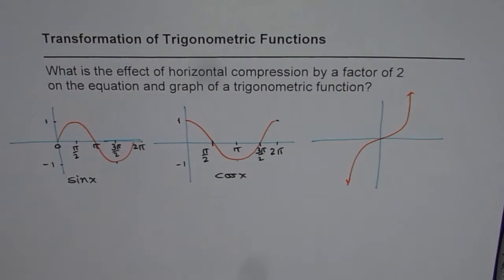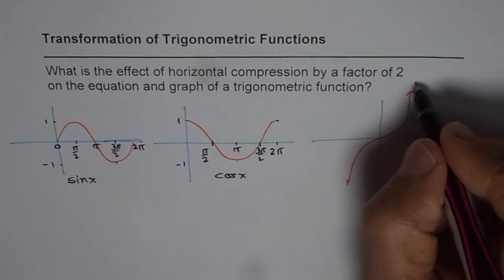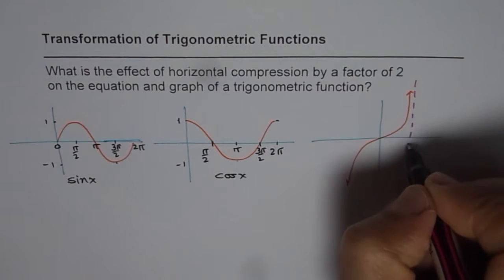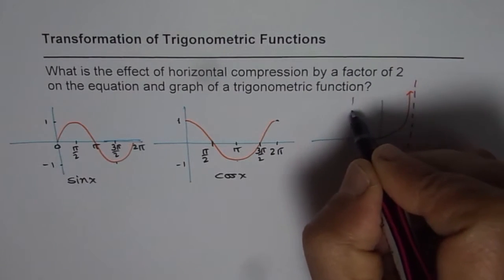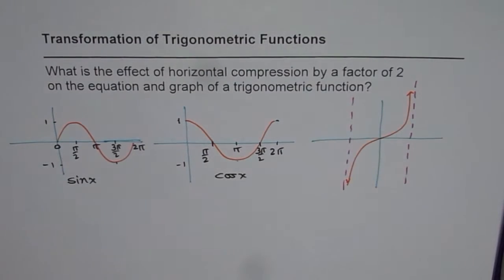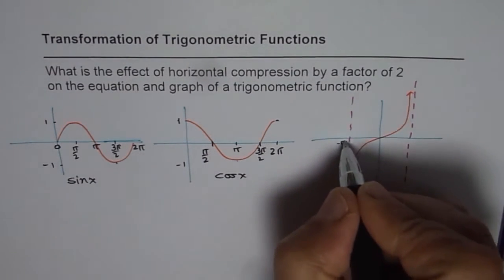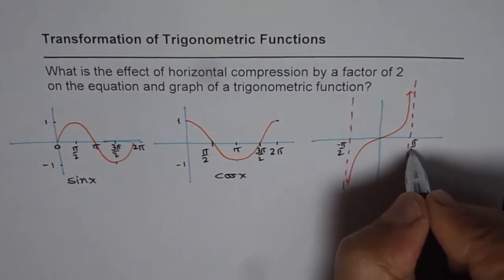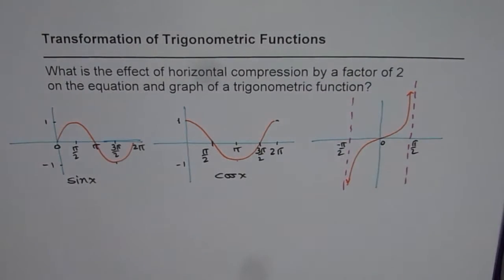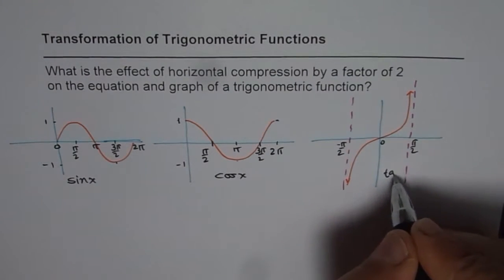As far as tan is concerned, the time period for tan is pi, not 2 pi and it has vertical asymptotes at minus pi by 2 and plus pi by 2, 0 at the origin. So that is tan x for us.